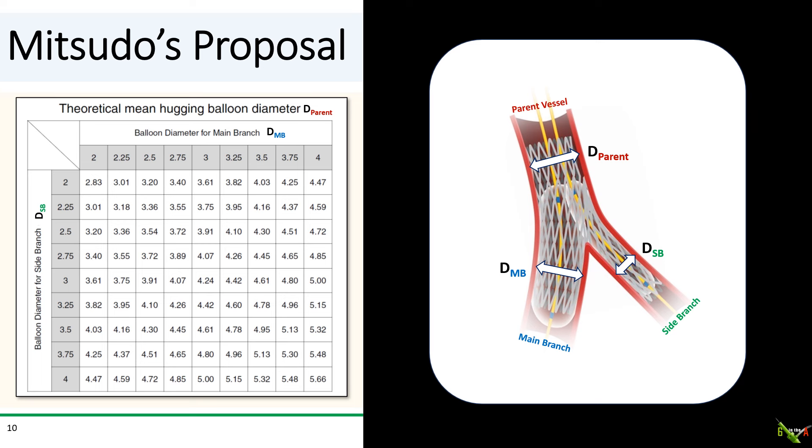Or say you're trying to figure out a side branch balloon size in the case of a 5.0 millimeter parent vessel and a 4 millimeter main branch. Well, again, if you look at this table, you'll see that you should choose a 3.0 millimeter balloon for the side branch.